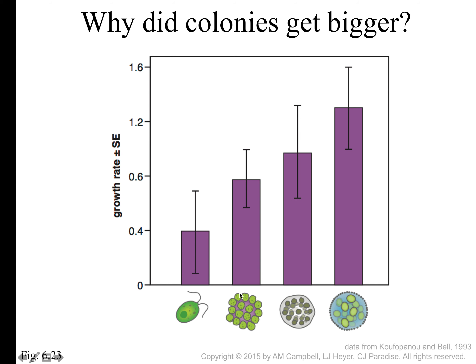Looking at different types of cells and their growth rates: this is a single-cell algae called Chlamydomonas, then a cell that grows in a flat two-dimensional film, then approaching a volvox colony, and then a full three-dimensional ball colony of volvox. As you get more three-dimensional and more multicellular, the growth rate of the organism increases across this comparison.